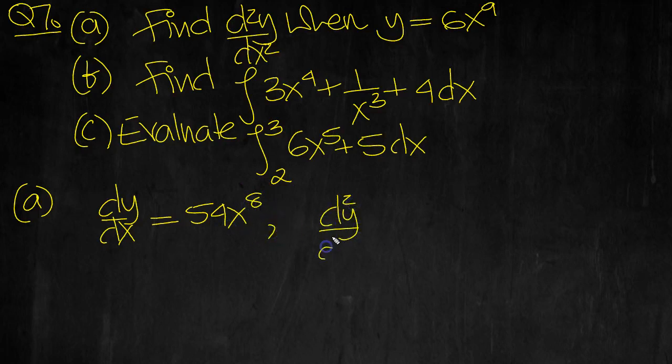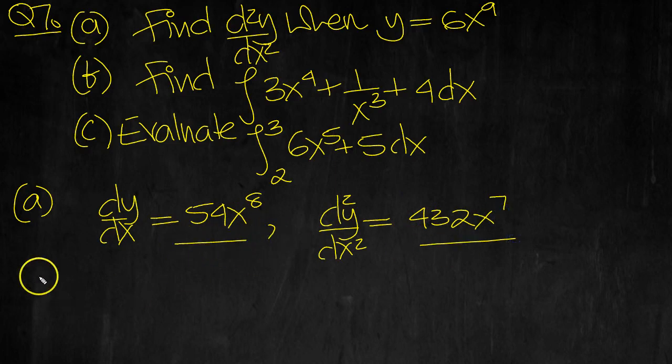And d²y/dx² then, the 8 comes down, 8 times 50 is 400, 8 times 4 is 32, so 432, x to the 1 less, which is 7. So we've done that, part B.